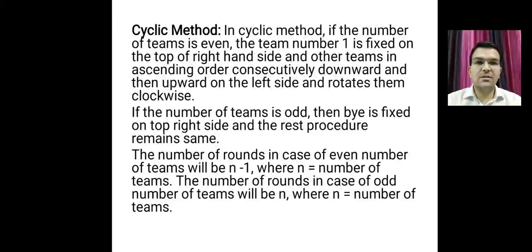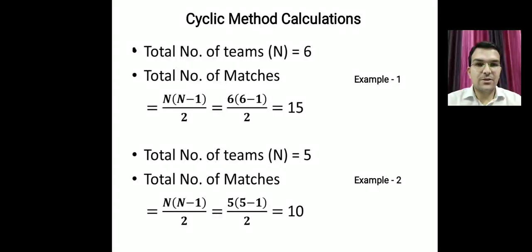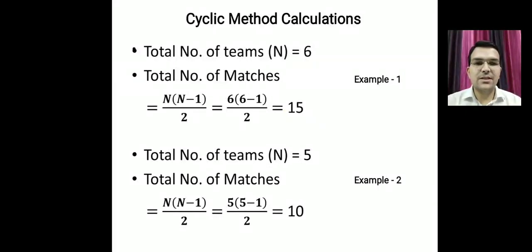For example, if there are six teams, there will be five rounds, and if there are five teams, there will also be five rounds. Let us discuss two examples — one with six teams and one with five teams. With six teams there are 15 matches, and with five teams there are 10 matches, as per the formula.